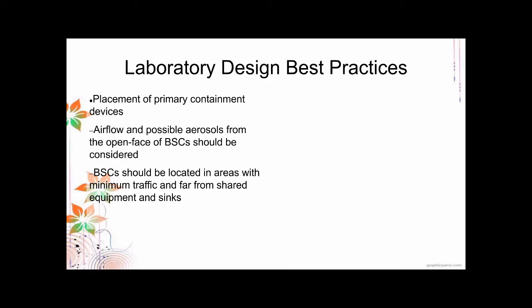Placement of primary containment devices: where you place your biosafety cabinets, laminar hoods, and other equipment must be well-designed. Airflow and possible aerosols from the open-faced BSC should be considered. When using Class 1 or Class 2 biosafety cabinets, there is an air curtain providing protection, but when you insert your arms inside the BSC, you disrupt the airflow, and there may be a release of aerosols. Your biosafety cabinets should be located in areas with minimum traffic — people should not be constantly passing behind you — and they must be far from shared equipment and sinks.